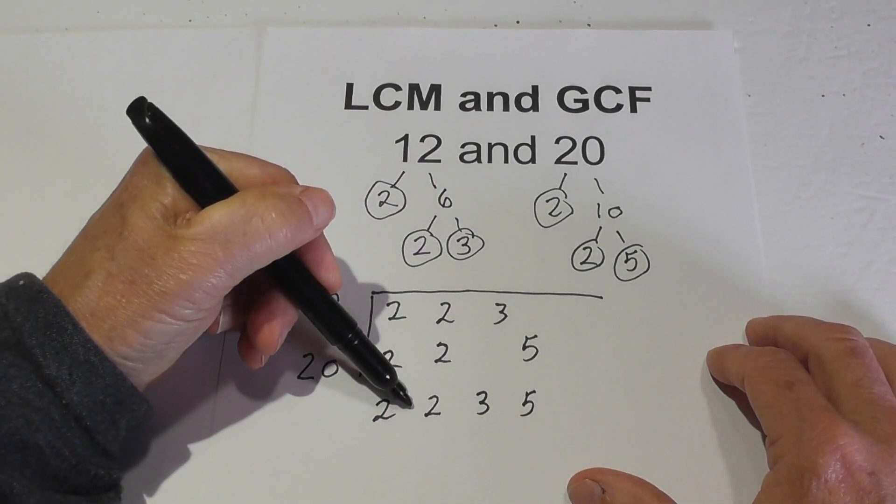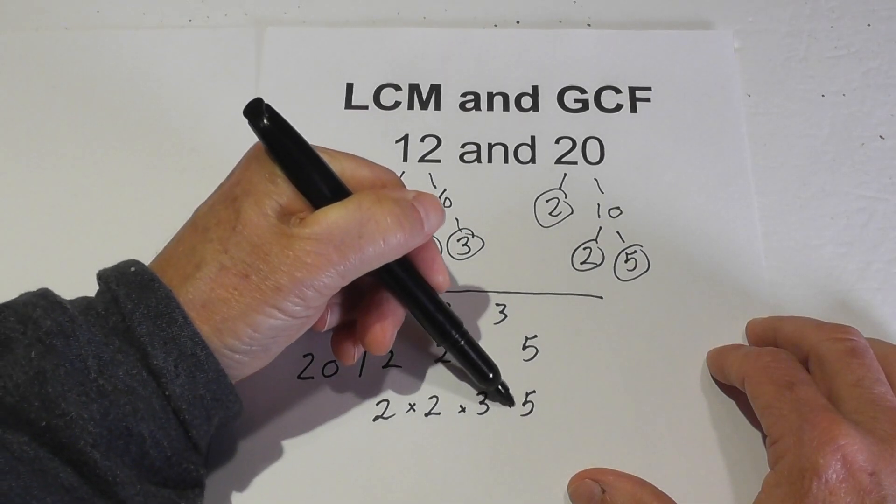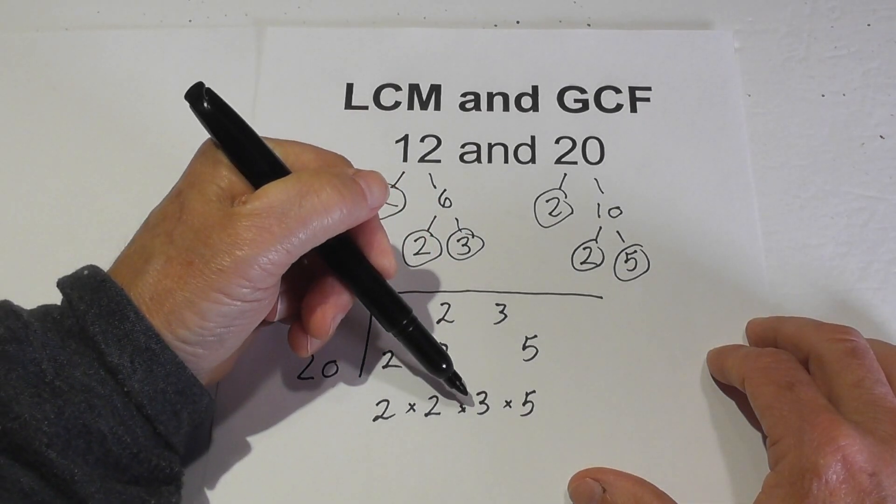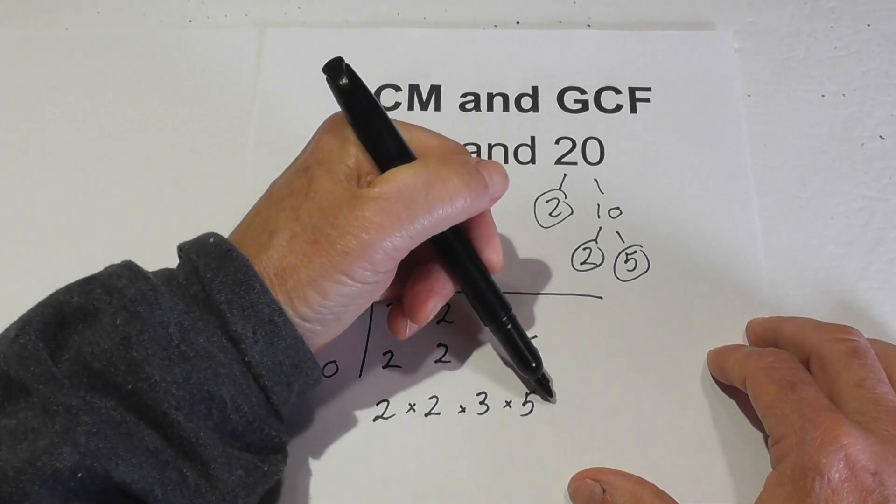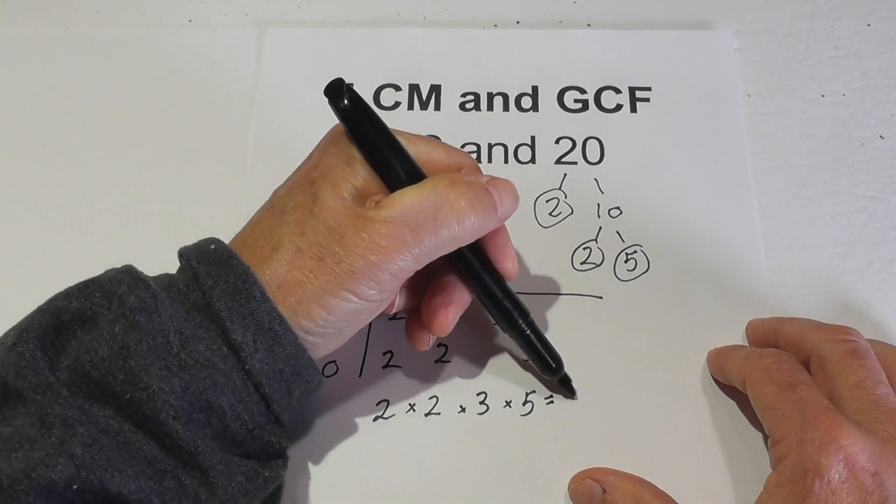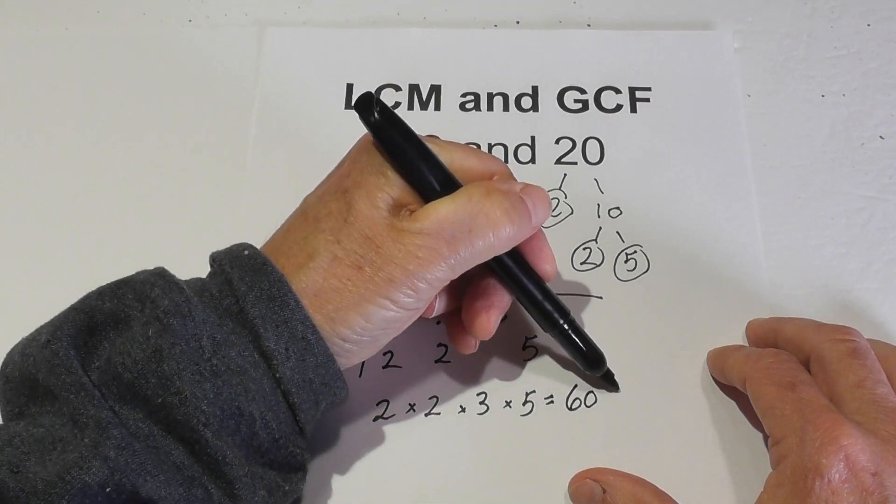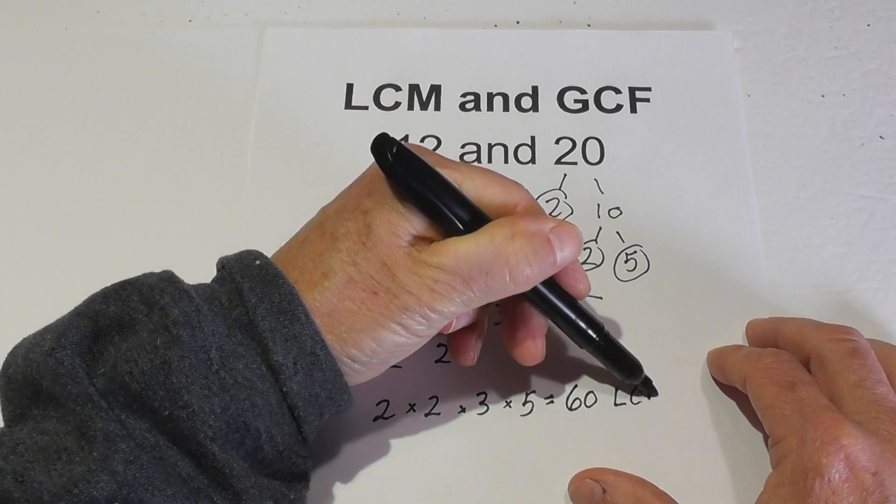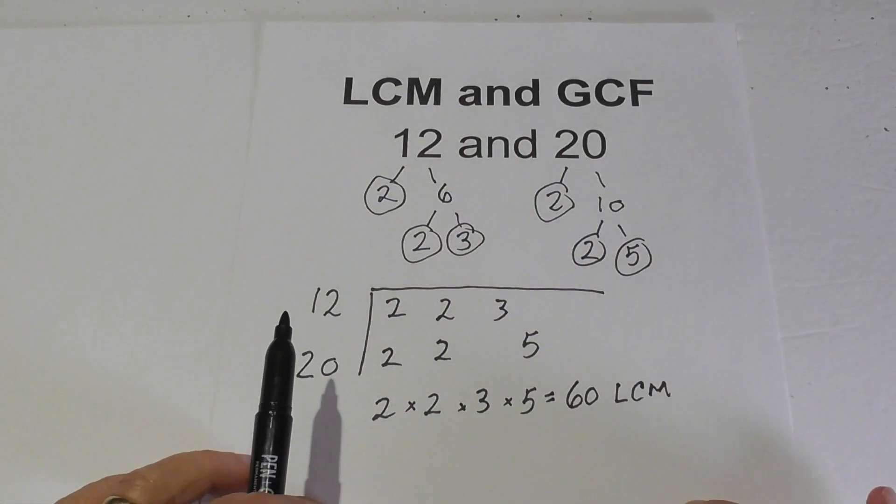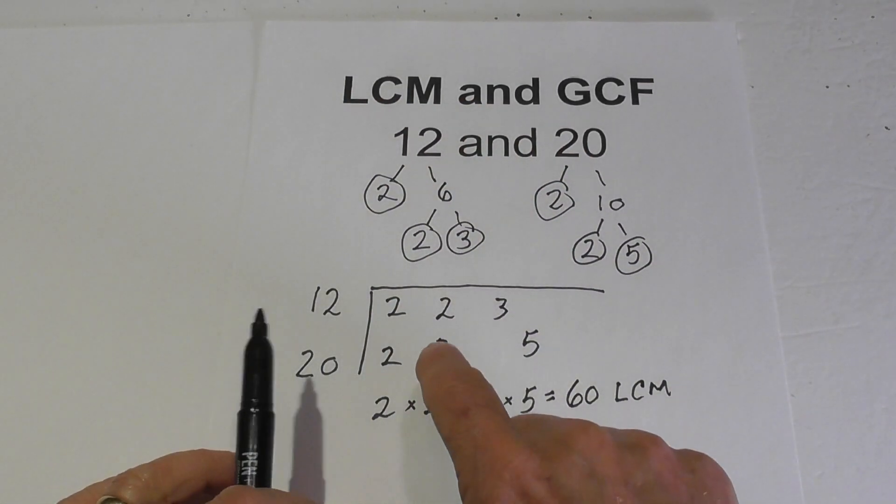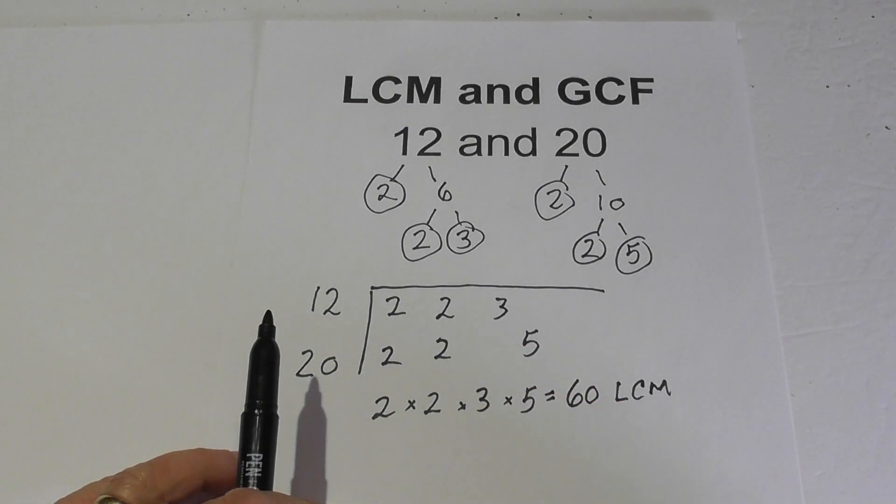And now I just multiply these together. So 2 times 2 is 4, 4 times 3 is 12, 12 times 5 is 60. So the LCM is 60. Now I can use the same chart in order to find the GCF. So let's do that next.